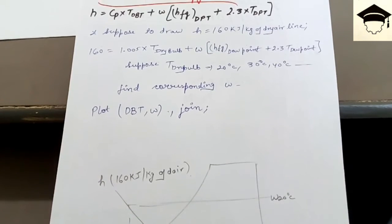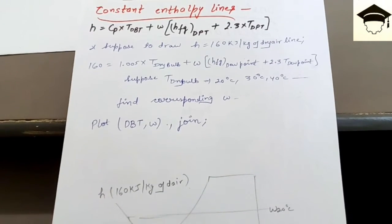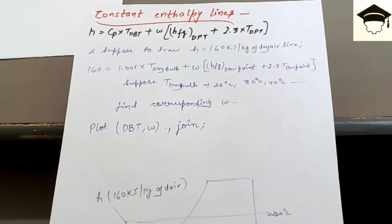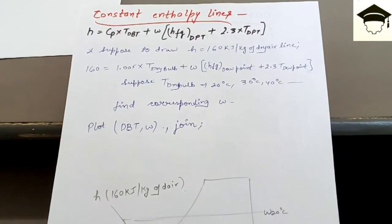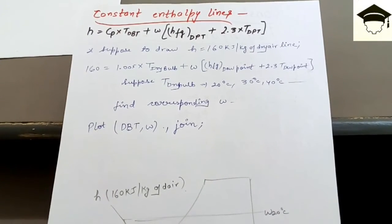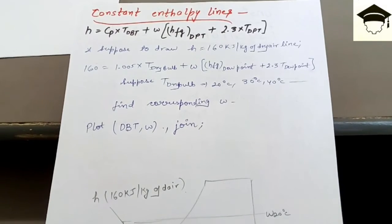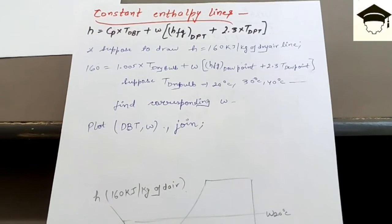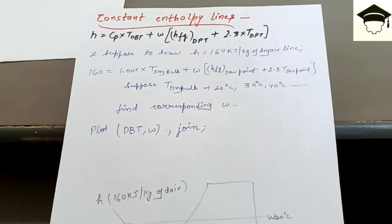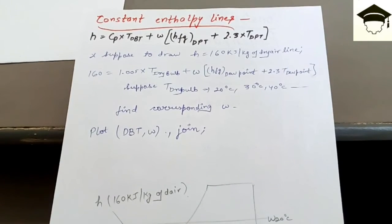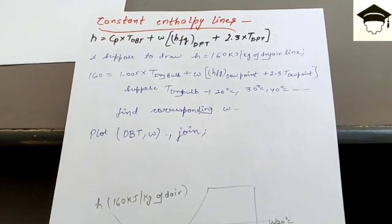Hello everyone and welcome to my channel. In this video I will be explaining how you can construct the constant enthalpy lines for a psychrometric chart. If you are new to this channel, please subscribe by pressing the subscribe button below. If you find this video helpful, please like the video. If you have any doubts, please comment on the video. Do follow me on Facebook, Twitter, and Google Plus.